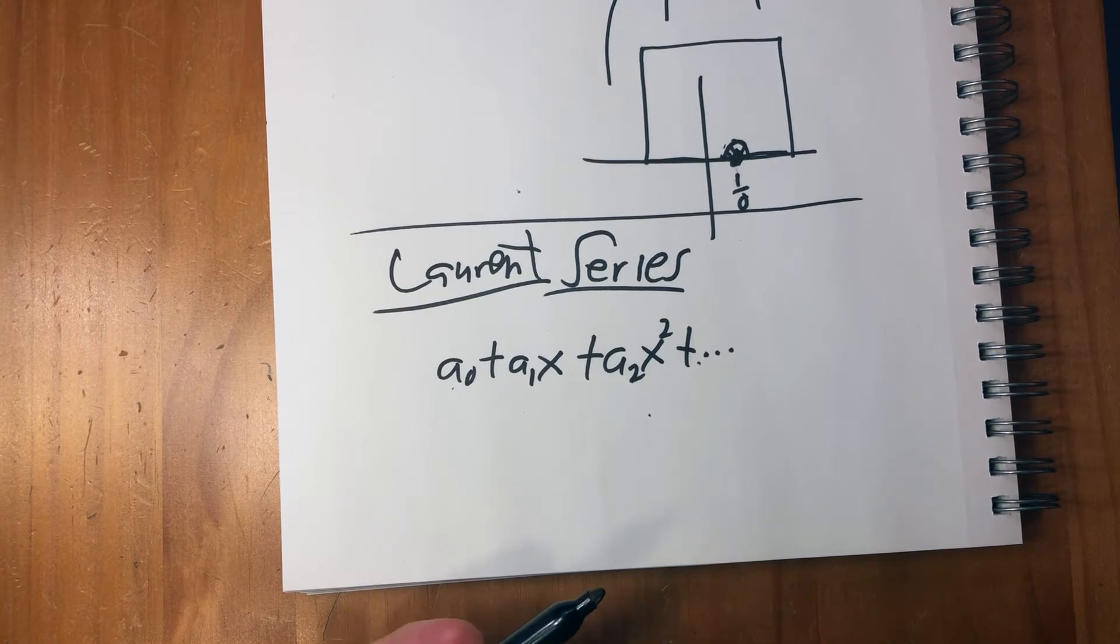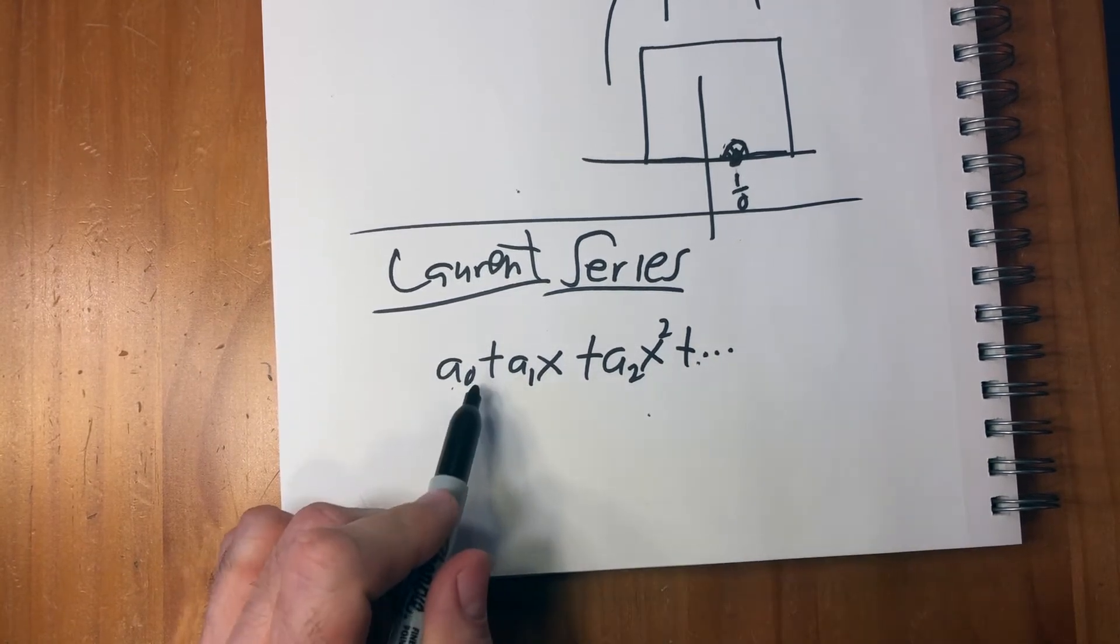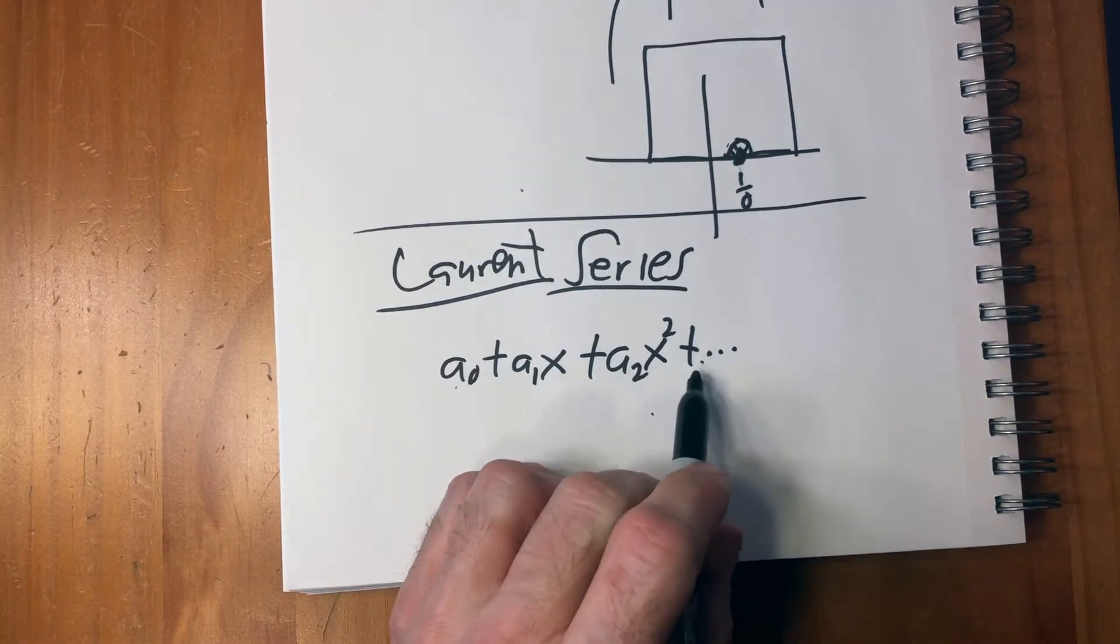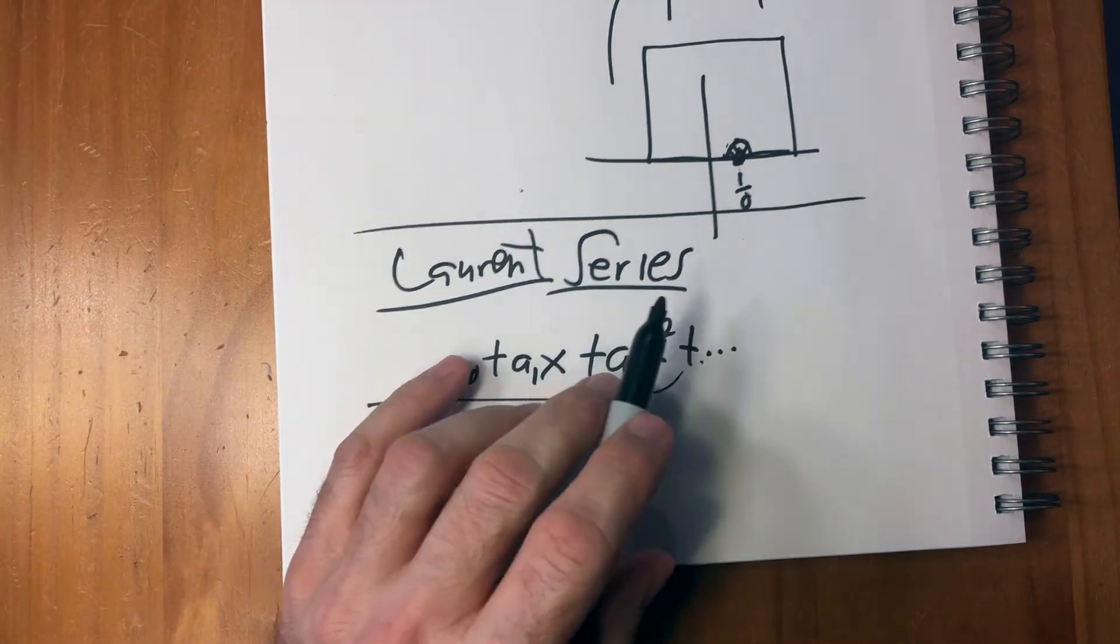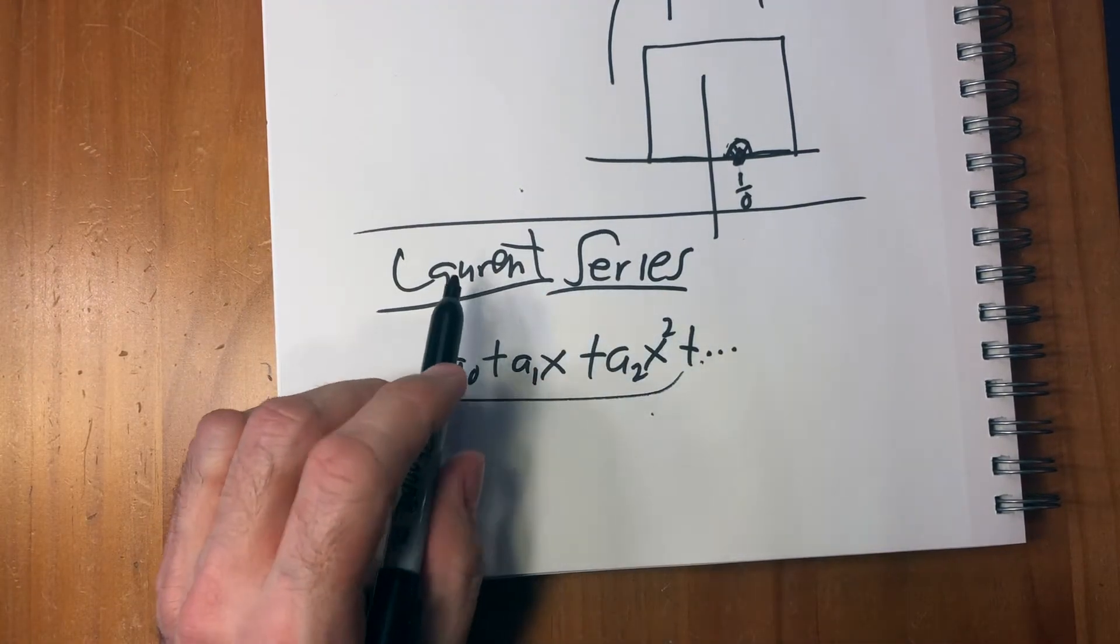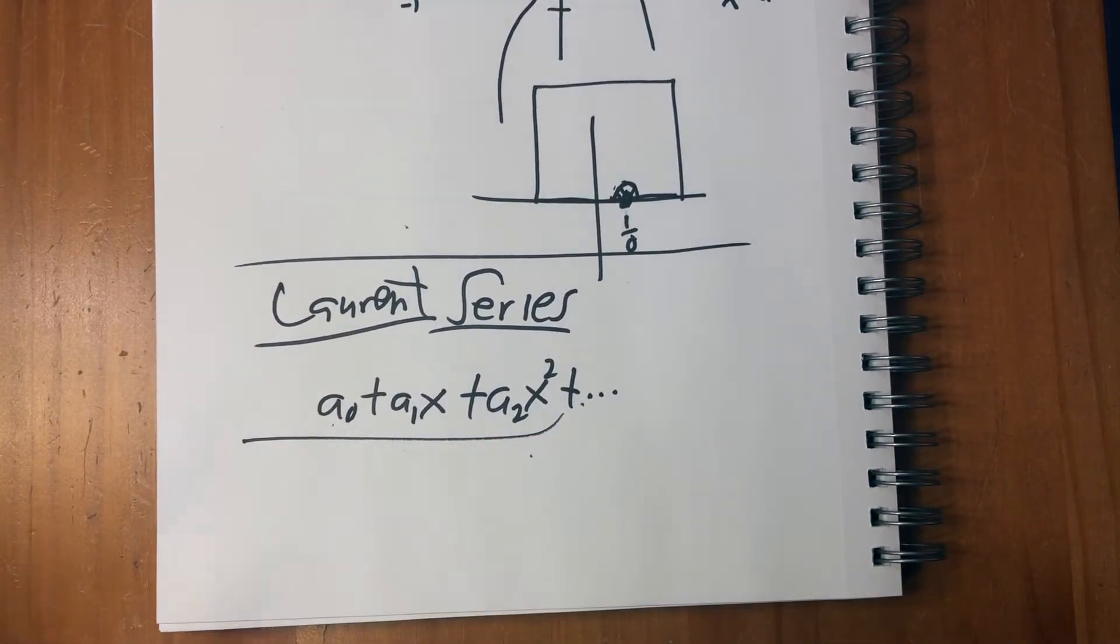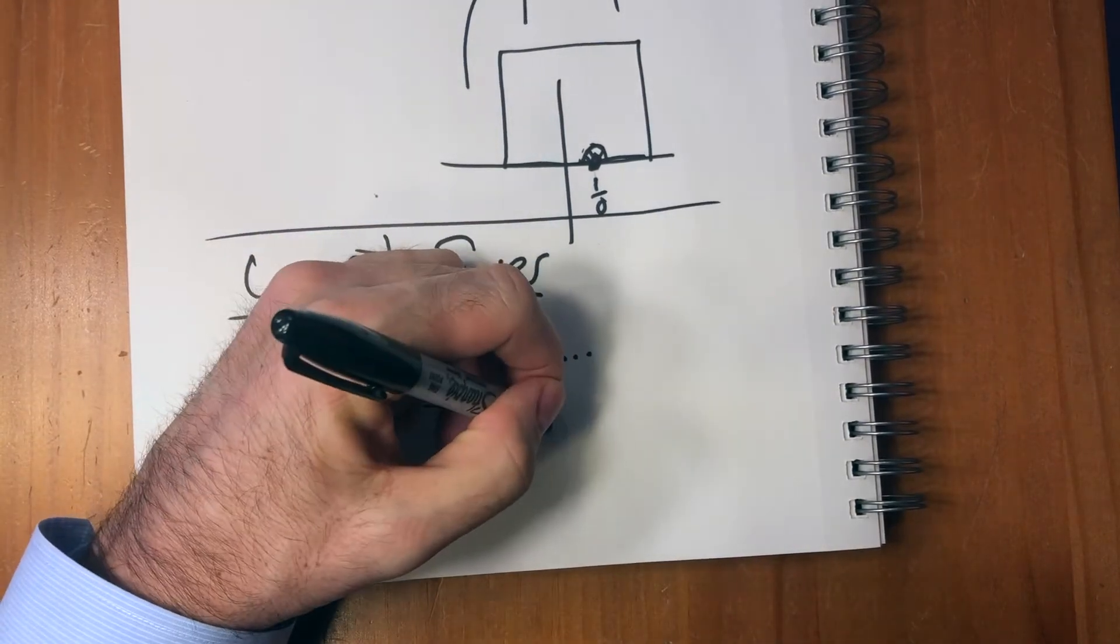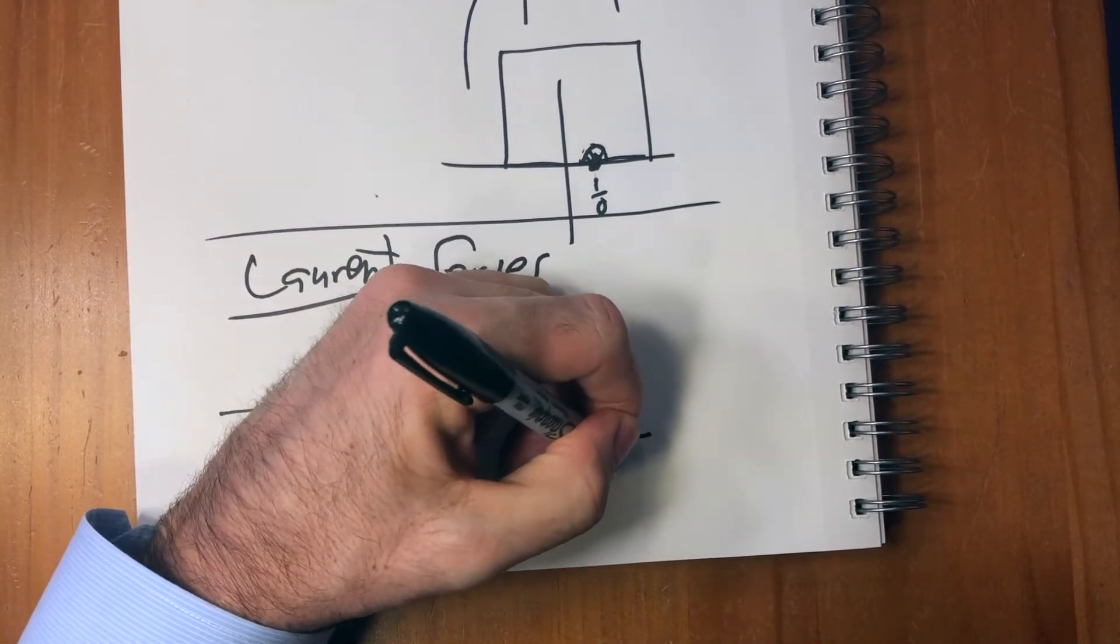And then the reason this is so important is that this is really easy to differentiate and integrate. So if you can get your equation into this, then from there, it's easy. So Laurent added something to this though, these equations have to be smooth. Laurent added some more terms plus ones with fractions.